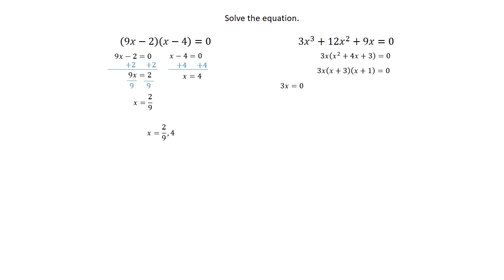So our first possibility is 3x equal to zero, second one is x plus 3 equal to zero, and third one is x plus 1 equal to zero. We solve all three of these, and we have all three of our solutions.